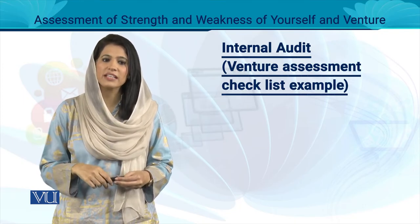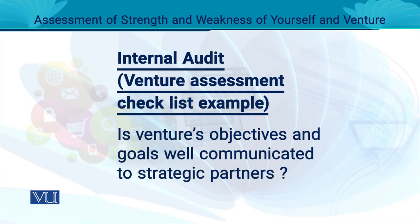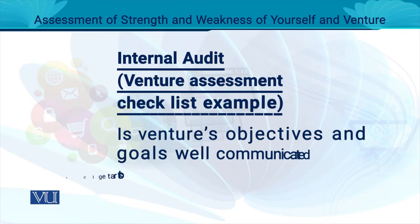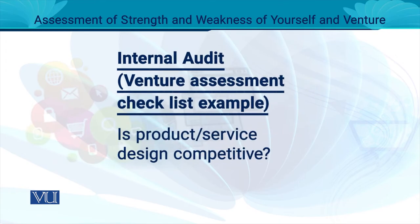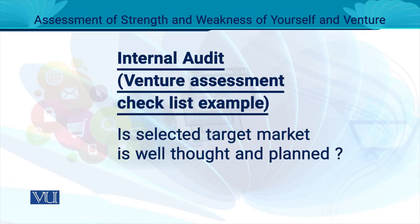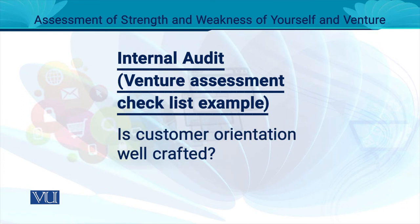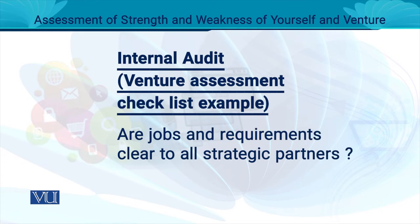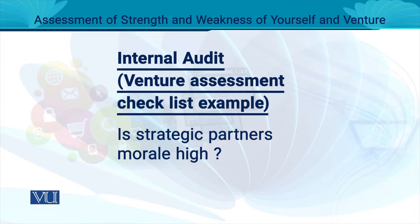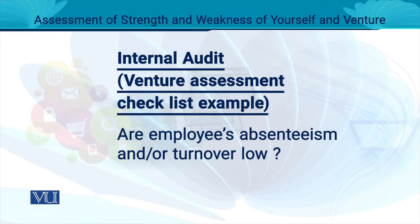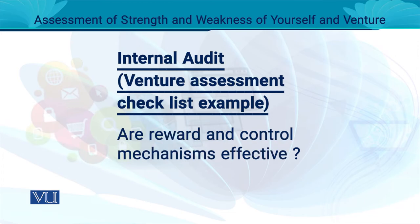For example: Are the venture's objectives and goals measurable? Are the venture's objectives and goals well communicated to all strategic partners? — because sometimes two partners come with a business idea but Partner A has a completely different perception and Partner B has a different one. Is the product or service design comparative? Is the selected target market well thought out and well planned? Is my pricing strategy comparative? Are my unique selling propositions well communicated to the target market? Is customer orientation well crafted? Is the venture structure appropriate? Are job descriptions and requirements clearly communicated to all strategic partners? Is strategic partner morale high? Are employee absenteeism or turnover rates low? Are reward and control mechanisms effective?